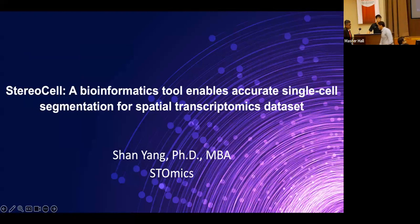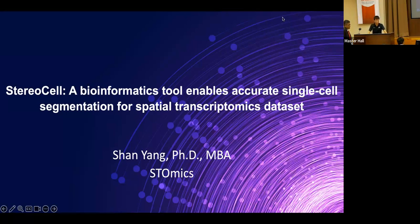Nice talk. I'm curious about the SHAP choice. There are a lot of choices in explainability or feature attribution — like SHAP, SVCAM, integrated gradients, counterfactuals. What went into the decision to use SHAP? What are the trade-offs with SHAP that might affect other domains or other applications of these protein language models?